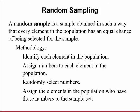In statistics, if you want a representative sample, one thing that's important is obtaining what's called a random sample. A random sample is a sample obtained in such a way that every element in the population has an equally likely chance of being selected for the sample. Think about random sampling like putting everybody's name in a hat and drawing their names from the hat. The methodology is you identify each element in the population, assign numbers to each element, randomly select numbers, and then assign the elements in the population who have those numbers.